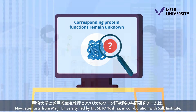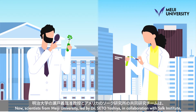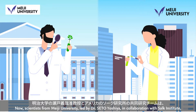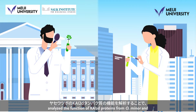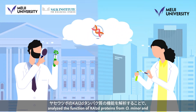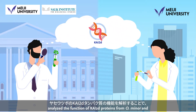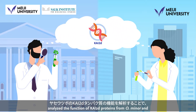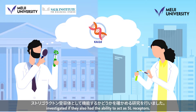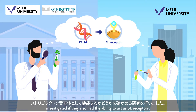Now, scientists from Meiji University, led by Dr. Seto Yoshia, in collaboration with Salk Institute, analyzed the function of CHI2D proteins from O. minor and investigated if they also had the ability to act as SL receptors.